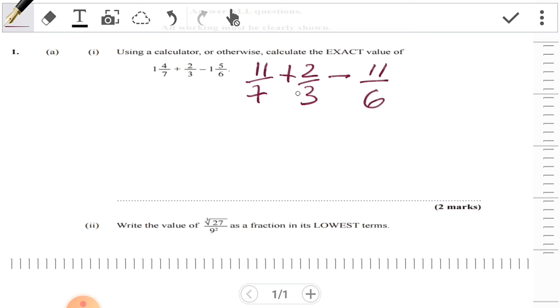Because we're adding and subtracting here, we could do all three at once. The LCM that we could work with is 42. So 7 into 42 is 6, 6×11 is 66.